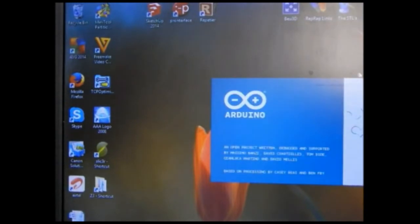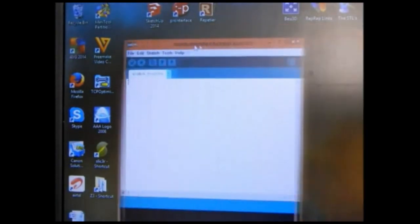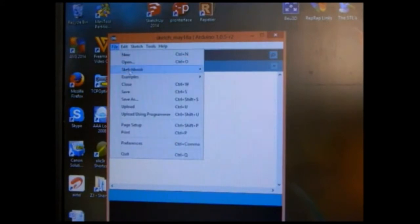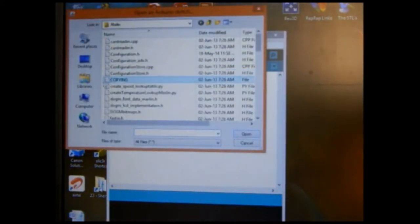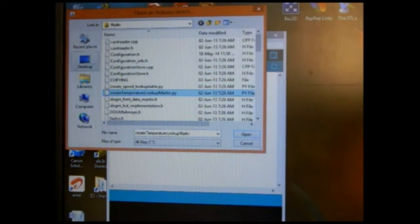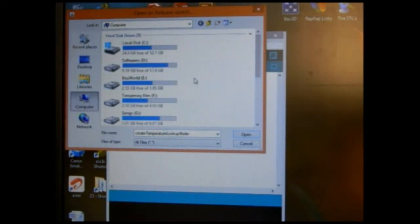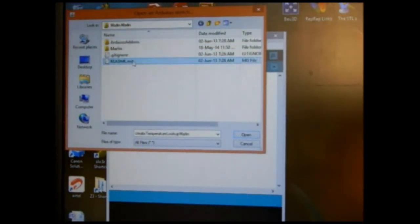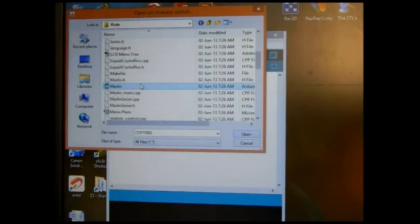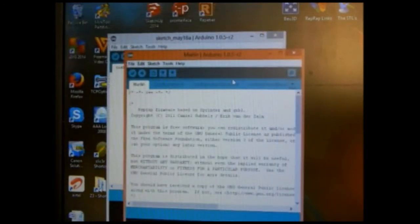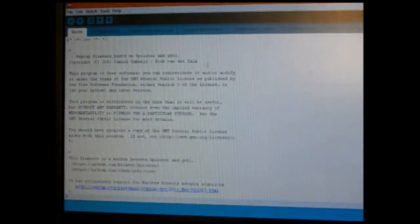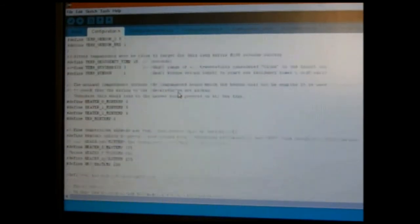To put this value into Marlin, open Arduino IDE, go to File, open, browse to the folder where you have kept your Marlin firmware. Open marlin.ino, go to configuration.h.